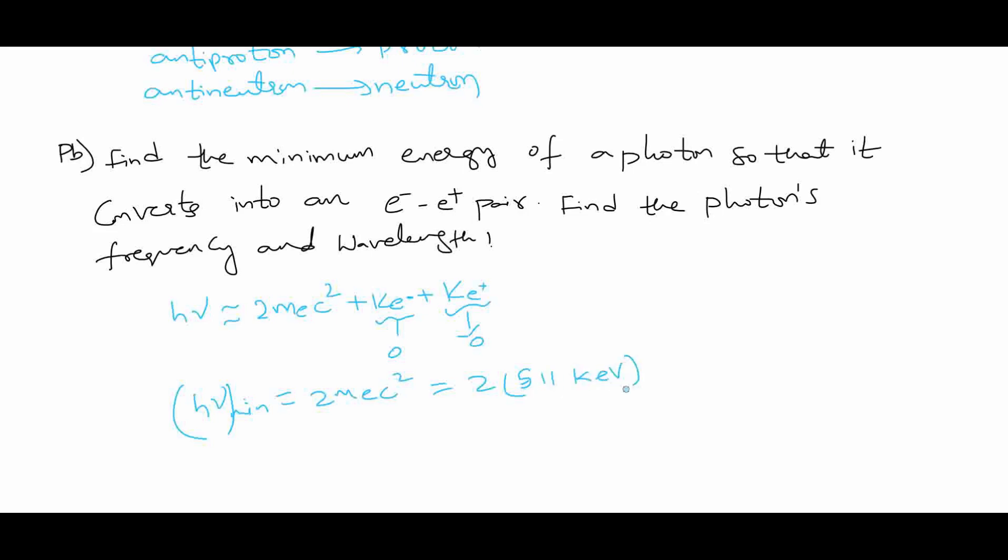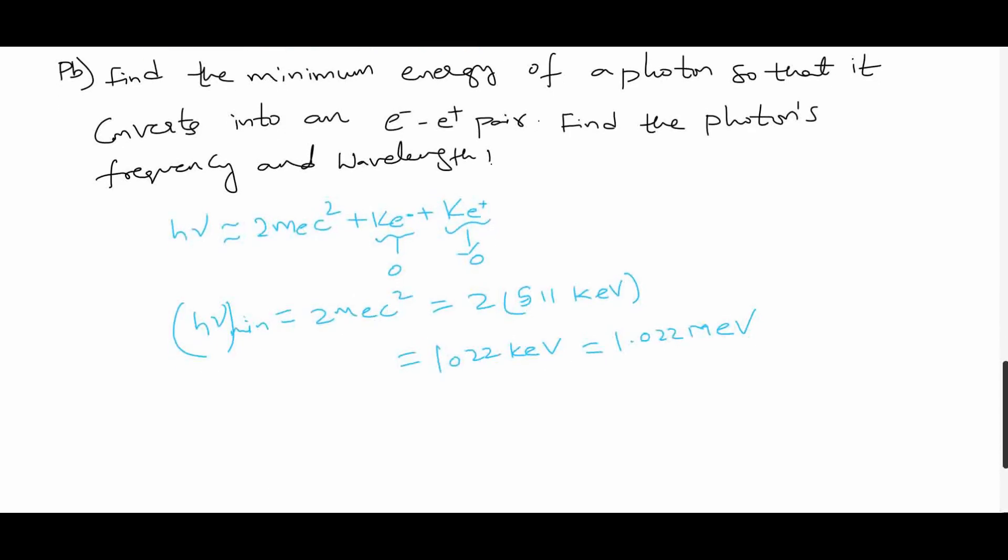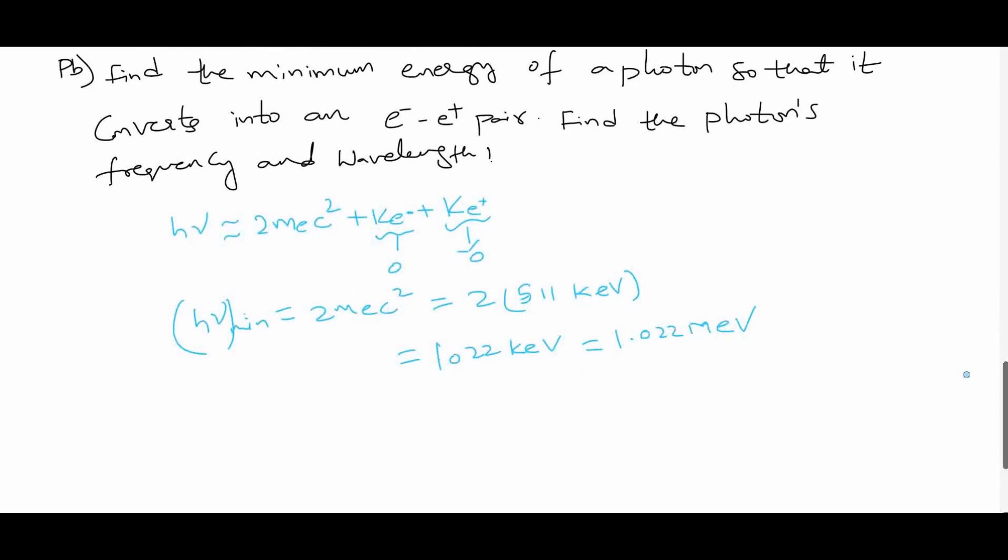This would be 1022 kilo electron volt, or it can be equal to 1.022 mega electron volt. This is the minimum energy of the photon that is required for producing the electron and positron pair.